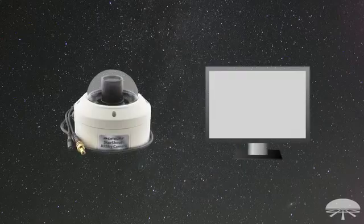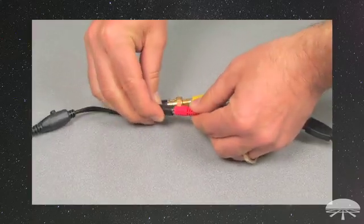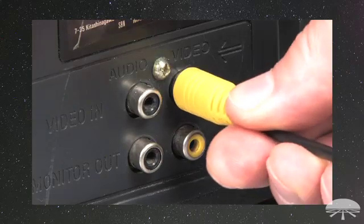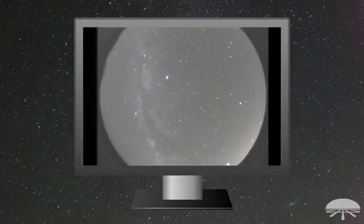First, we'll set up the All-Sky Camera for use with a TV. Attach the RCA and power cable to the camera itself, then plug the other ends of the cable into a power source and video input on your television. A live video from the All-Sky Camera should now appear on screen.